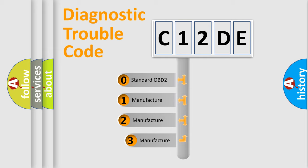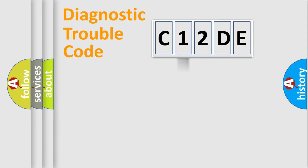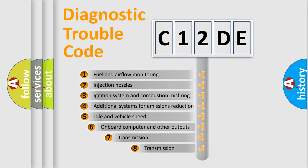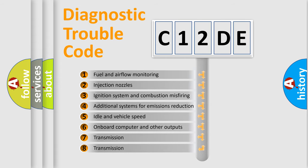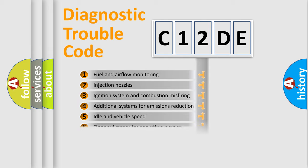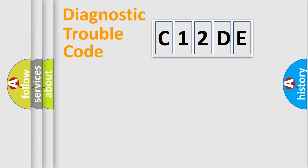If the second character is expressed as zero, it is a standardized error. In the case of numbers 1, 2, or 3, it is a manufacturer-specific error expression. The third character specifies a subset of errors. The distribution shown is valid only for the standardized DTC code.